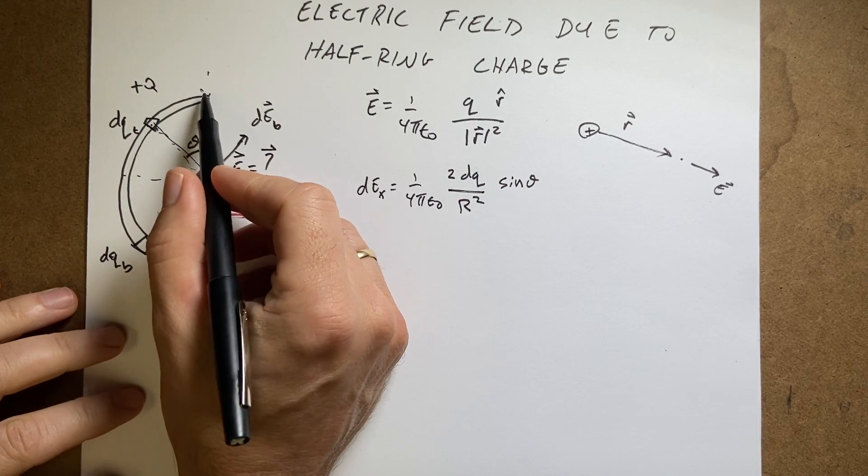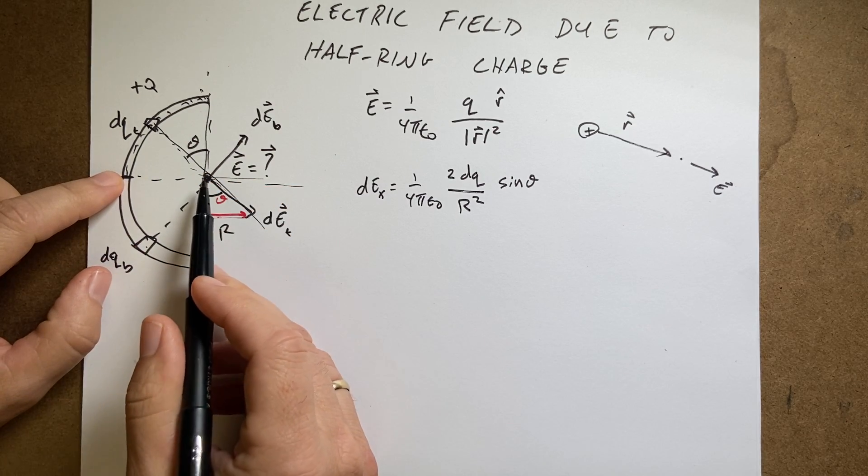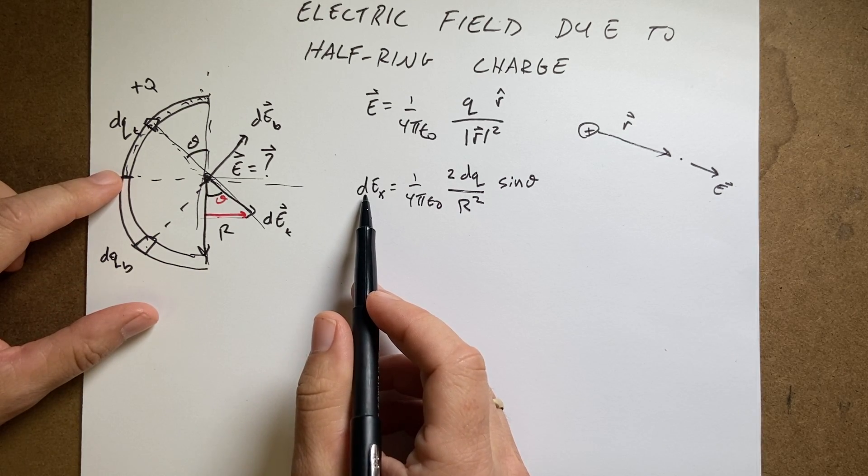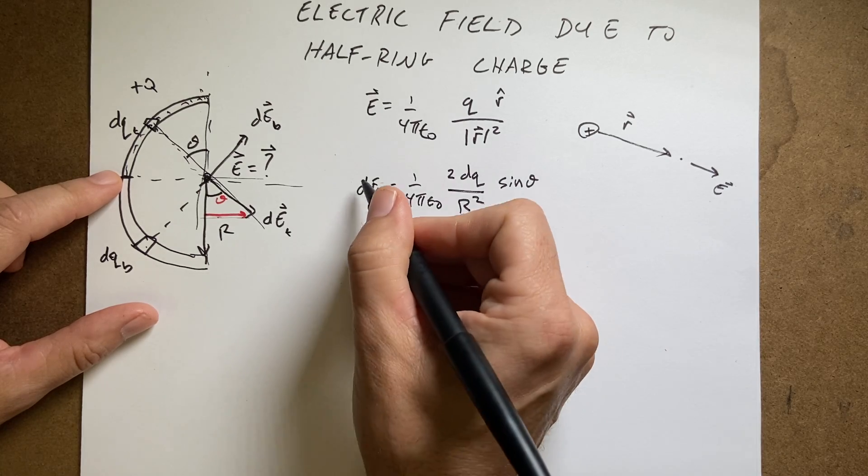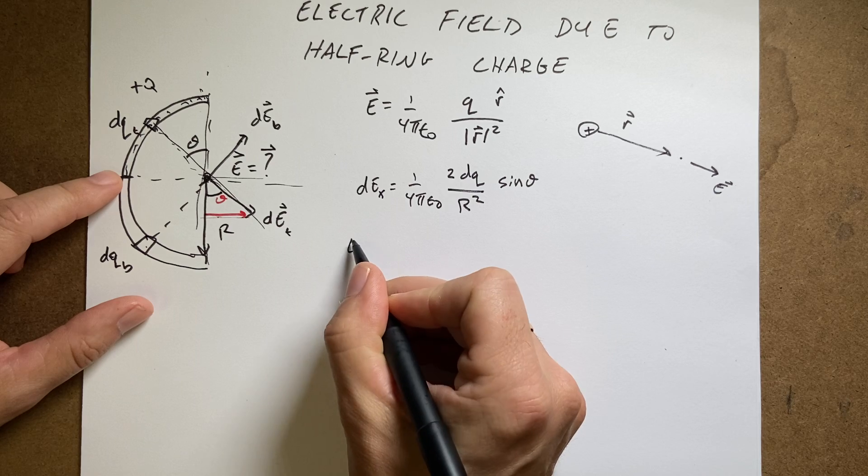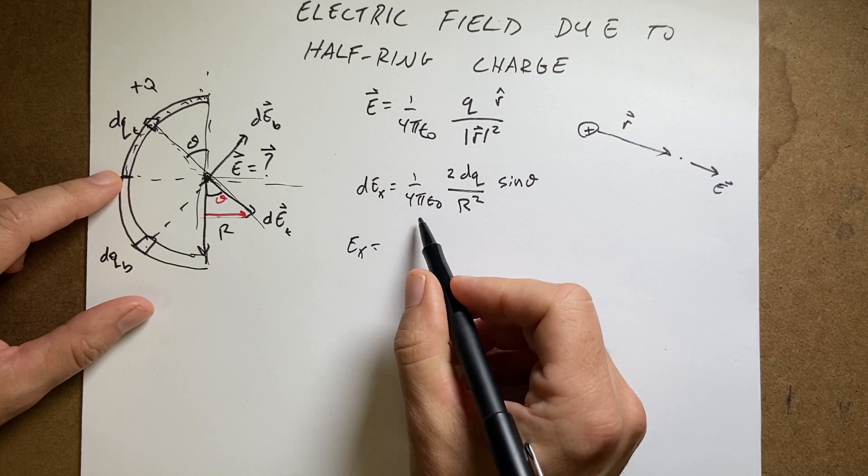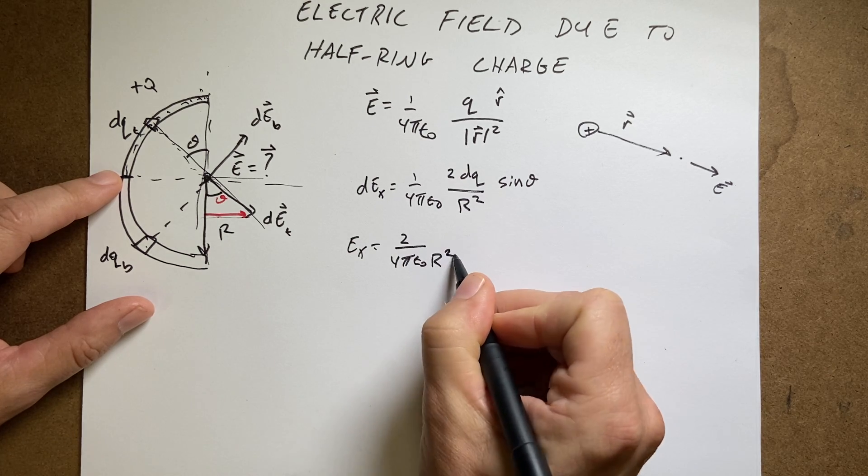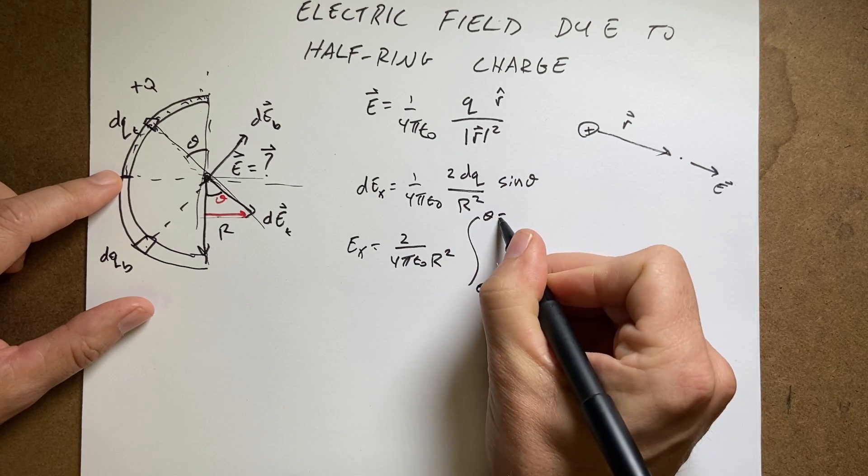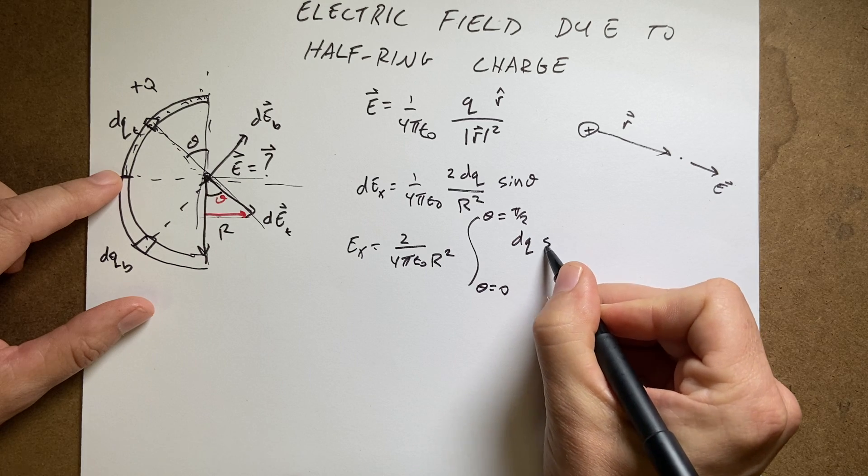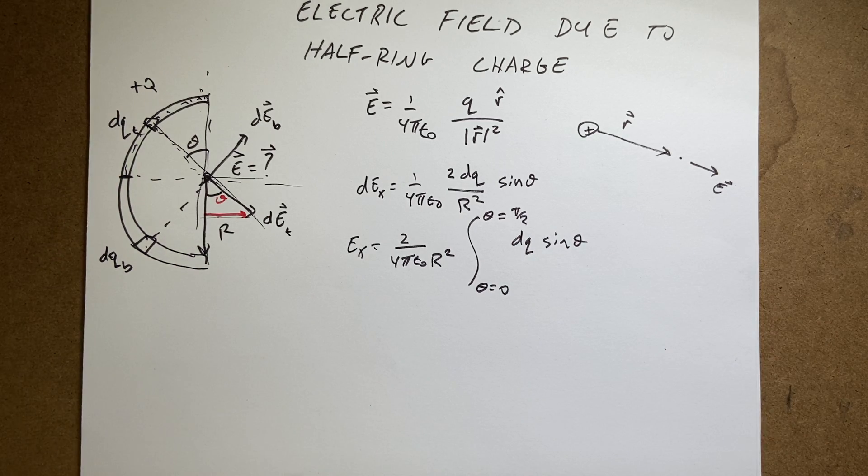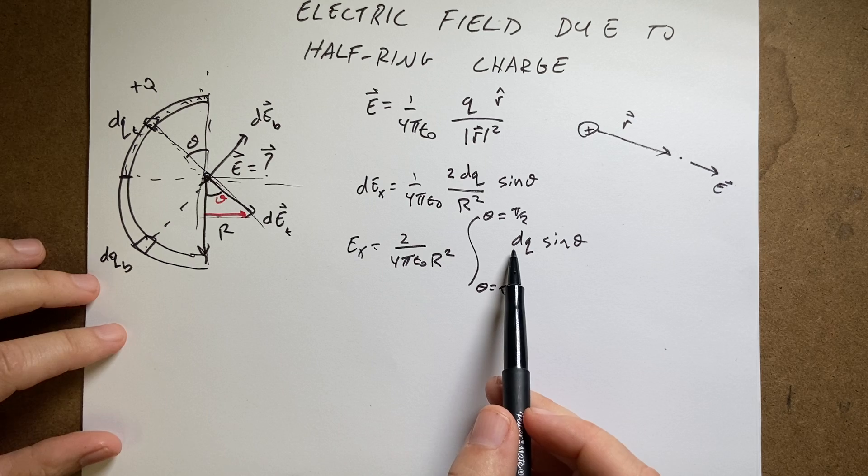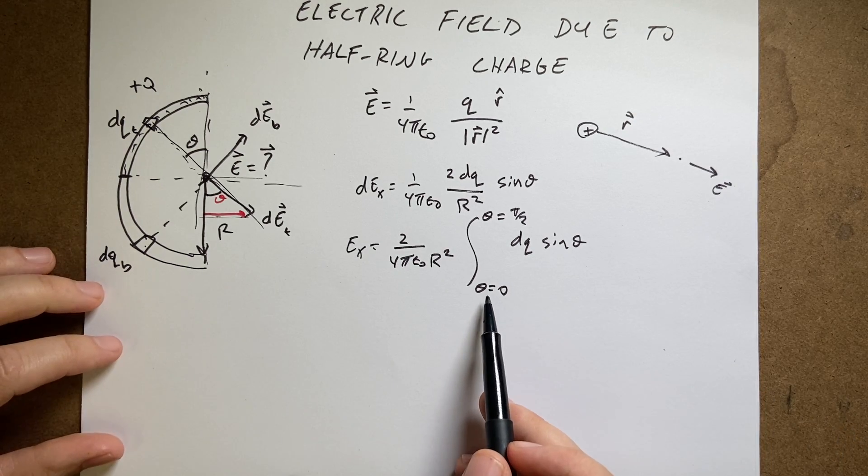Now I just need to add up all the pieces from here down to there. I only need to go from theta equals 0 to pi over 2 because I've already included these in my calculation. I have a differential, I can integrate both sides. If I integrate over all the dEx's, I just get Ex, and then I'm going to pull some of these things out front: 2 over 4 pi epsilon naught r squared. And I have theta equals 0 to theta equals pi over 2 of dq sine theta. But now we have a problem because I can't integrate this. My theta is changing as I go along here, and dq is my integration variable, so they don't match. I have limits in theta too, so I have a problem.